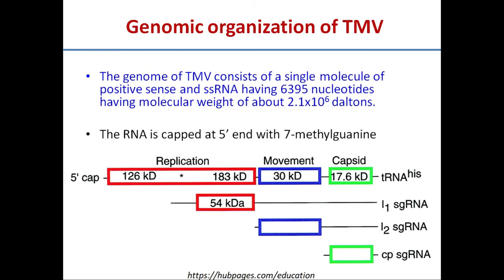Let us see the genome organization of tobacco mosaic virus, the most studied plant virus. The TMV genome is plus-sense single-stranded RNA consisting of 6,395 nucleotides. This RNA genome has a 7-methylguanine cap at the 5' end. There are three ORFs: the first and biggest ORF synthesizes a protein required for replication of the tobacco mosaic virus genome.